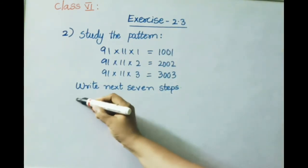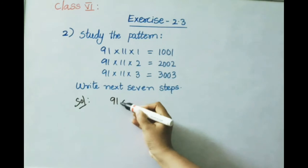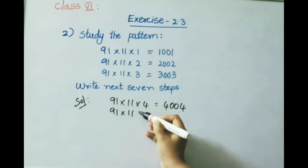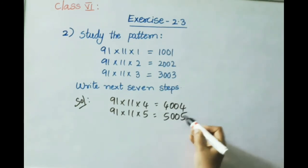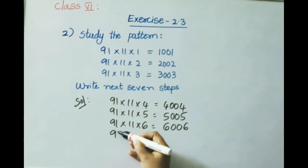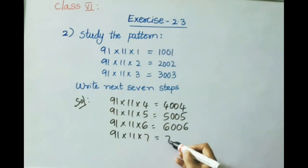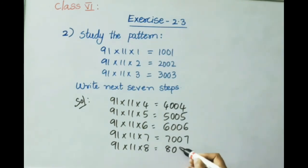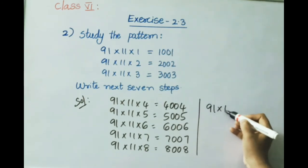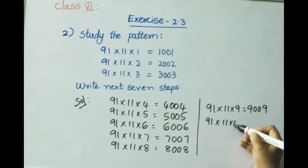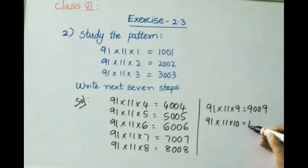Solution: 91 into 11 into 4 equals 4004. 91 into 11 into 5 equals 5005. 91 into 11 into 6 equals 6006. 91 into 11 into 7 equals 7007. 91 into 11 into 8 equals 8008. 91 into 11 into 9 equals 9009. 91 into 11 into 10 equals 10010.